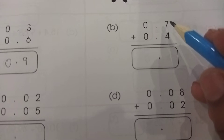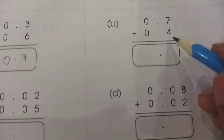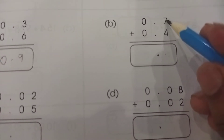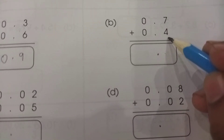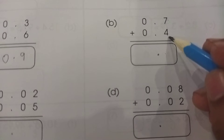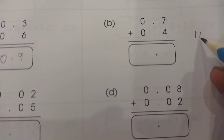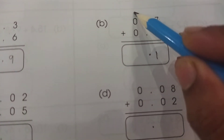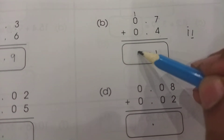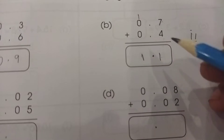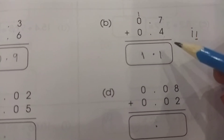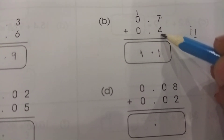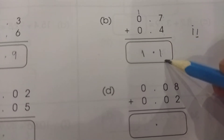Now, what do students do when we have two digits in the result? For example, 7 plus 4 is 11. We keep the units digit down and carry the tens digit — so we write 1 below and carry 1 forward. The answer is 1.1. Students sometimes write 0.11, but that would be incorrect. When we have two digits, keep the units digit under the column and carry the tens digit forward.